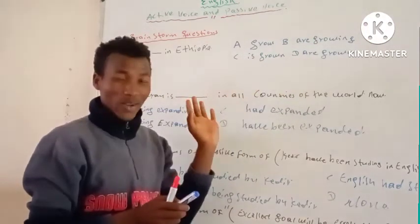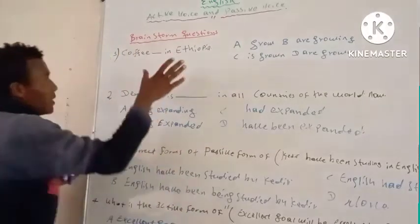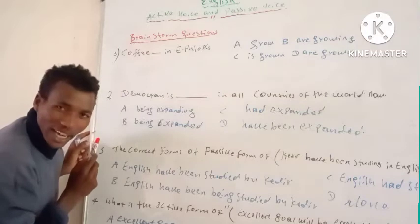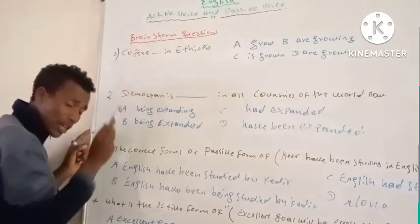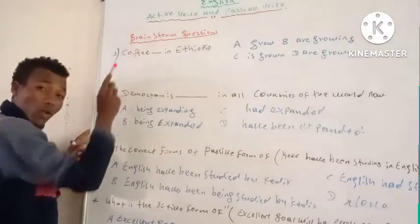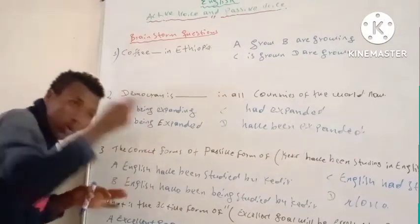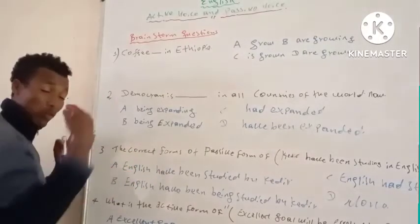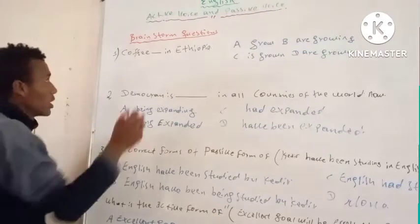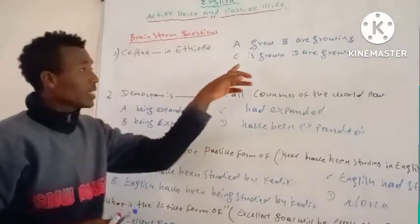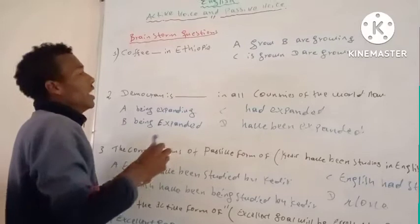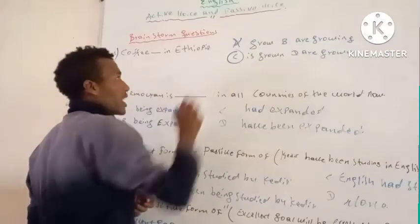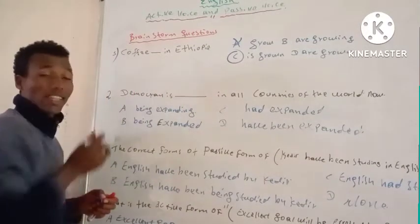This is in the form of passive voice. Coffee is the object here. So 'coffee is blank for Ethiopia' — the correct answer is C) 'is grown.' A) 'grow' is not correct because it is in the form of active voice.